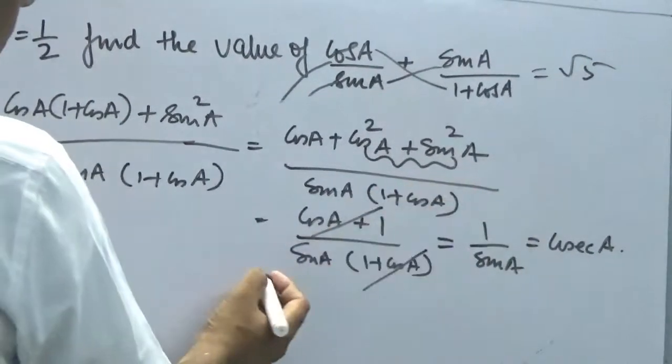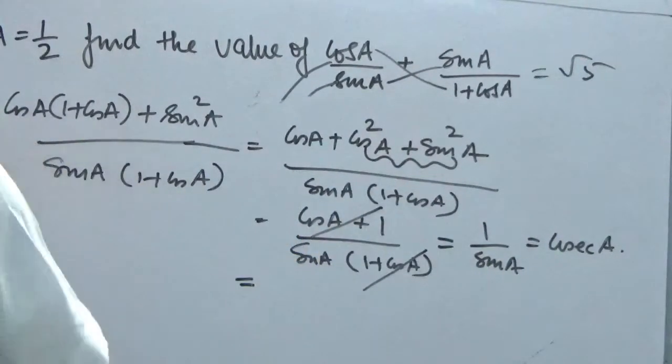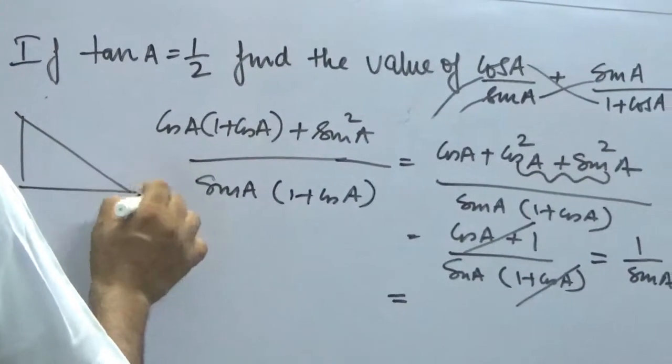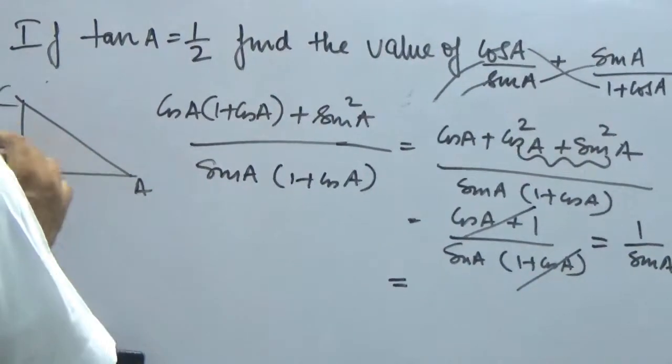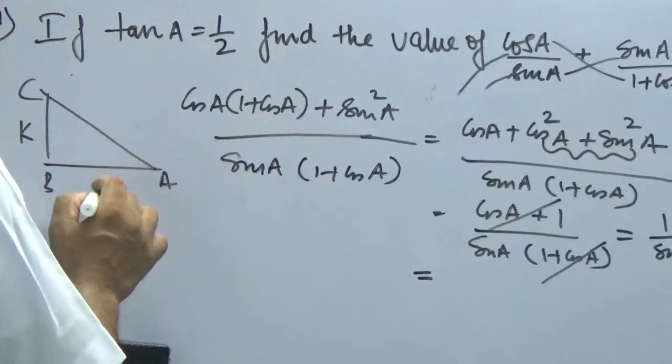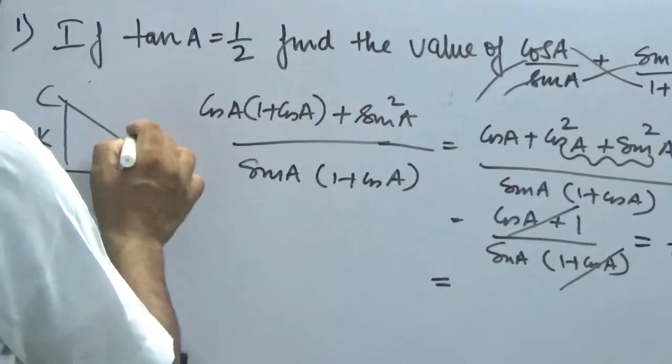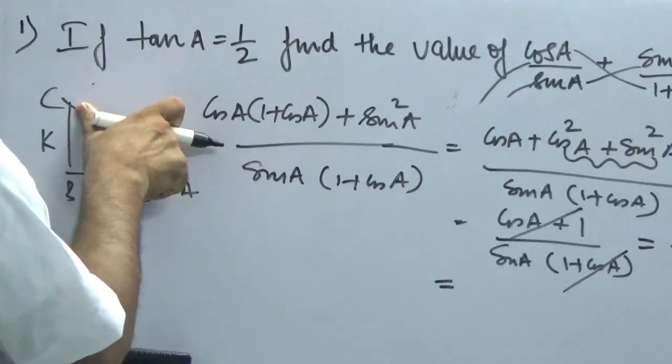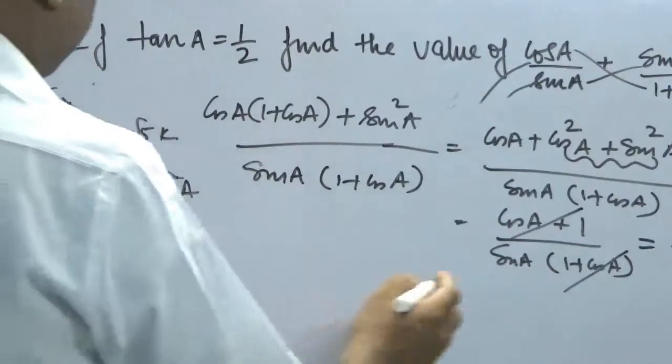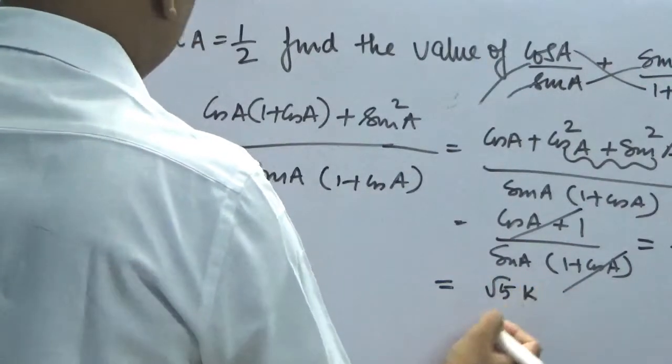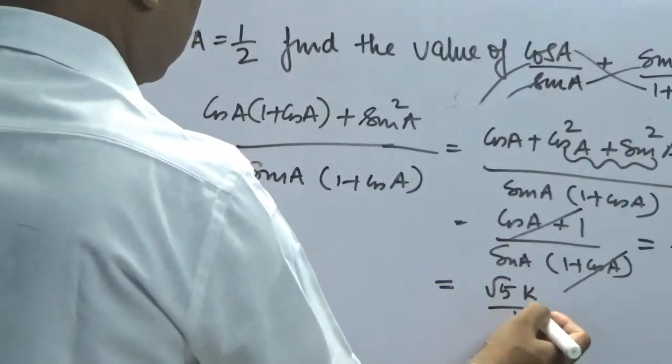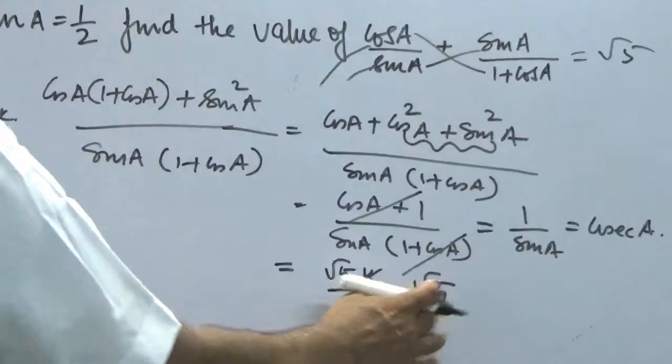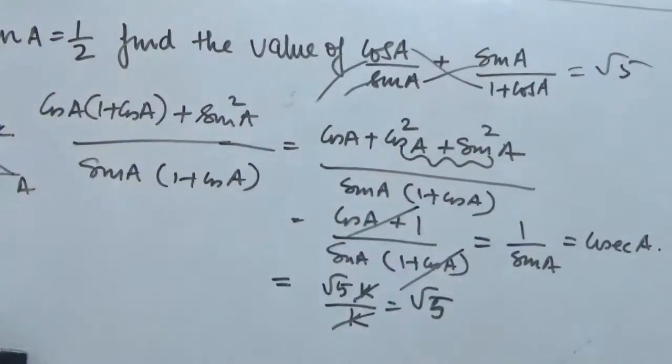Now cosec A will be nothing but let's take this triangle and try to get it: A, B, C. And we got this as k, this as 2k, and this as √5k. So cosec A is nothing but the hypotenuse divided by opposite side, which is nothing but √5k/k. K gets cancelled and finally we will get √5, which is the same as we got using the Pythagoras theorem.